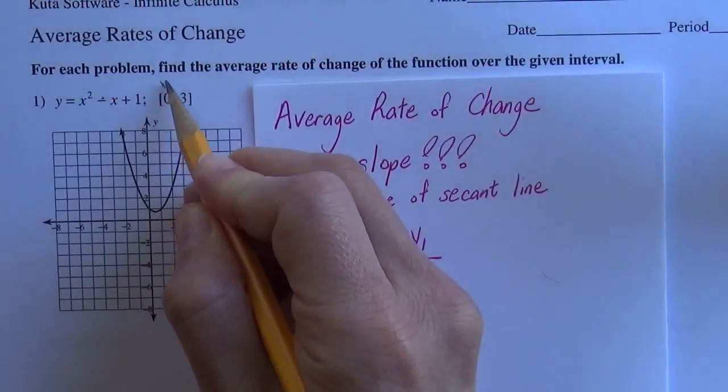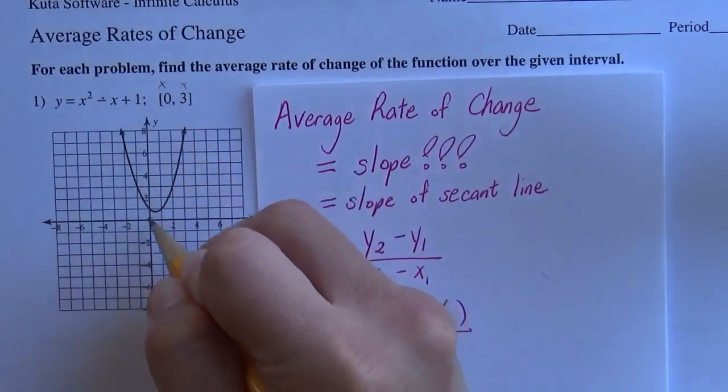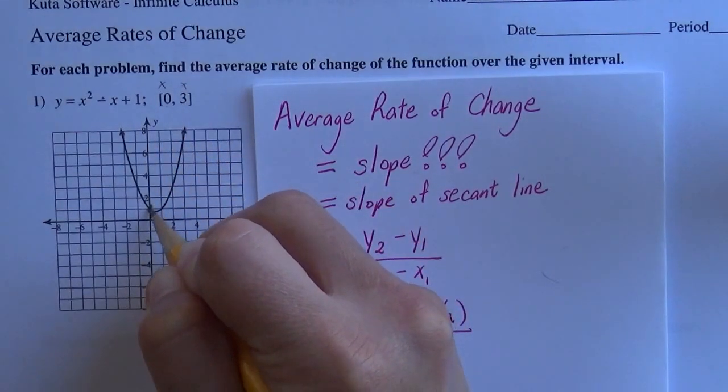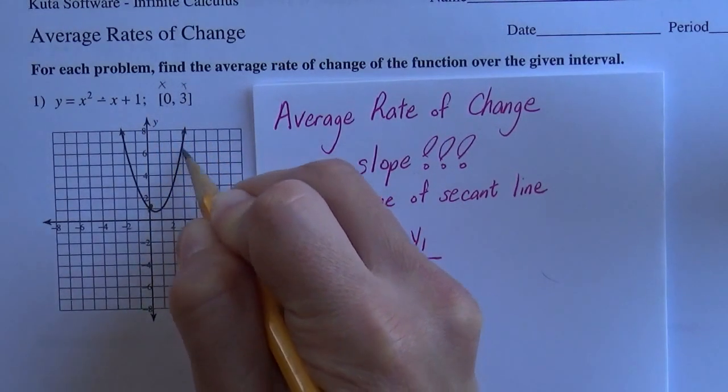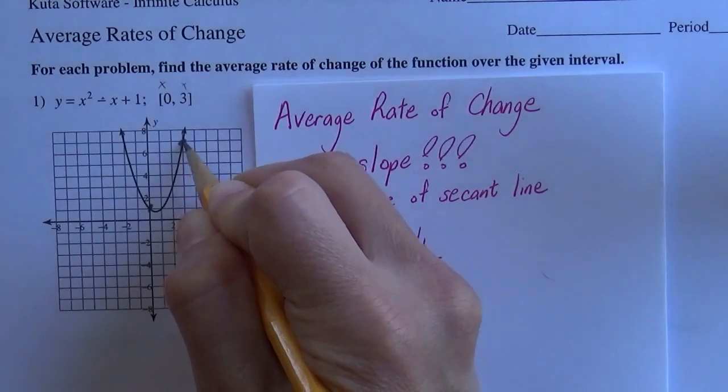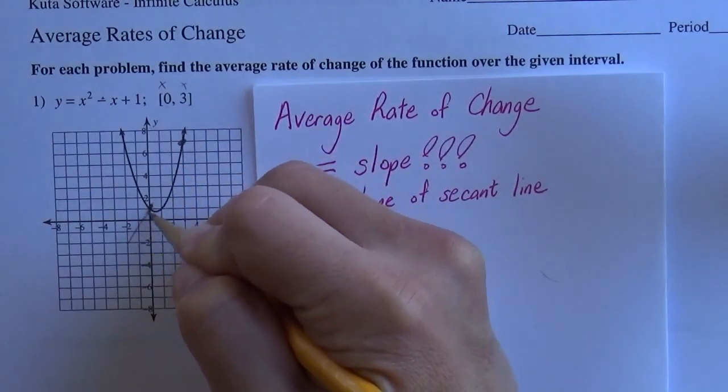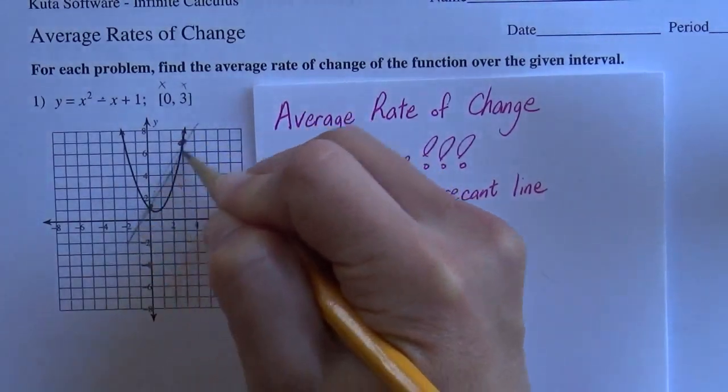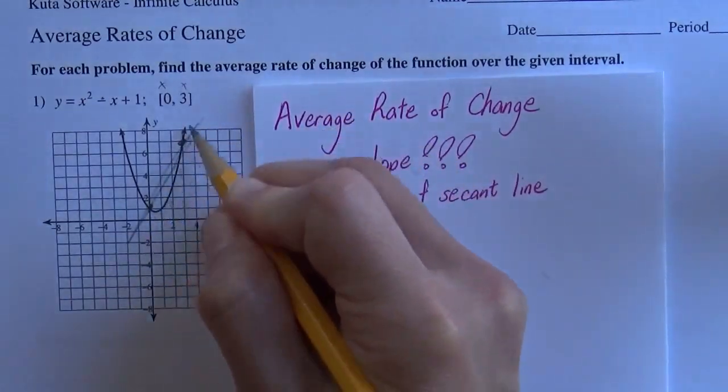If I'm going from x is 0 to x is 3, when x is 0 I'm here, and when x is 3 I'm up here. So the secant line between those two points approximates how much this function is changing, how much the rate at which this function is going up.